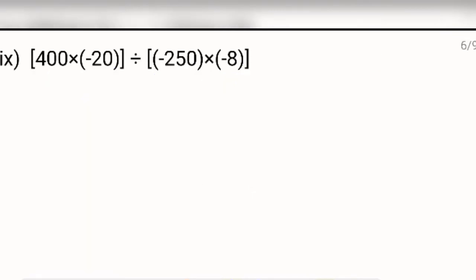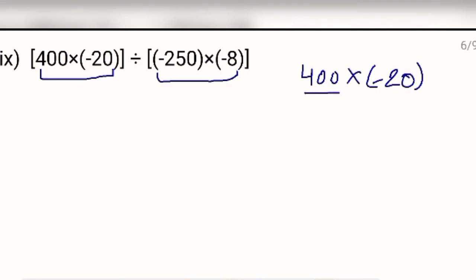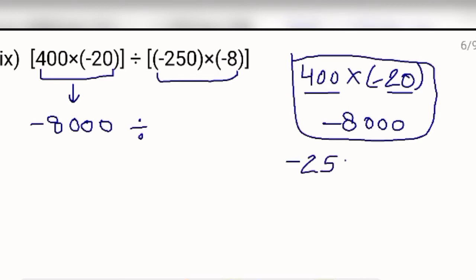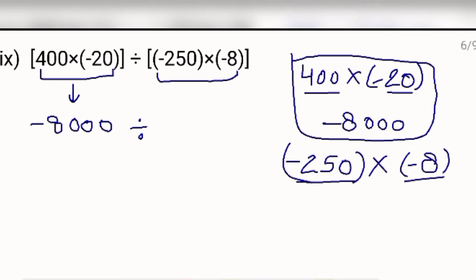Next question. Again, firstly you will solve these brackets. First bracket: 400 multiplied by minus 20. Multiply the numbers: 400 times 20 — 4 twos are 8, giving 8000. Plus minus gives minus, so after calculating this bracket you are getting minus 8000. Now solve the other bracket: minus 250 multiplied by minus 8. Minus sign in both numbers, so the answer will be positive. 25 eights are 200, giving 2000. Minus minus gives plus, so after multiplying you are getting positive 2000.